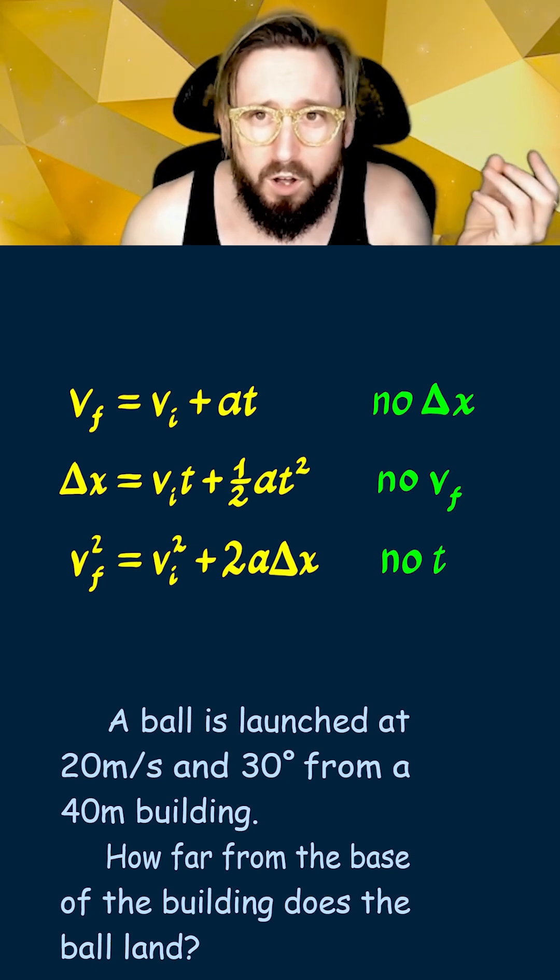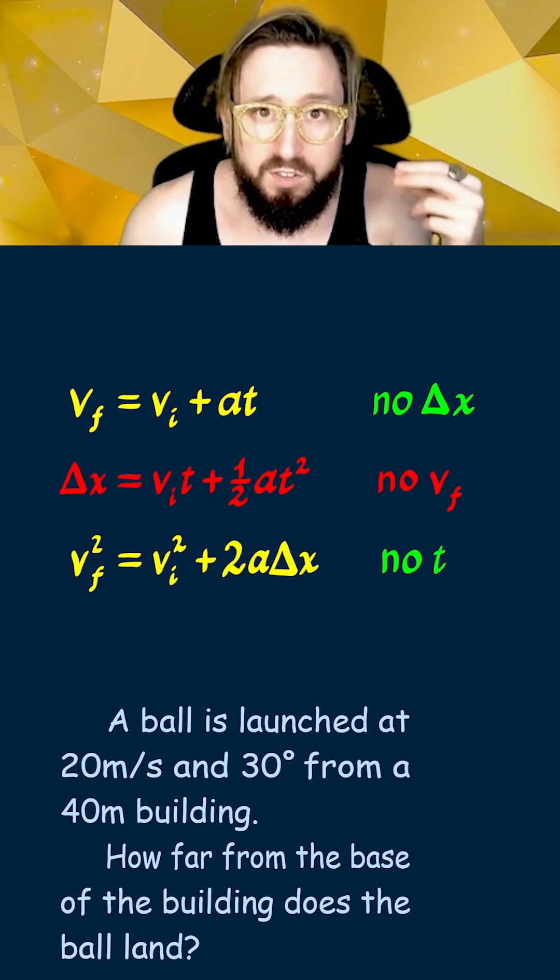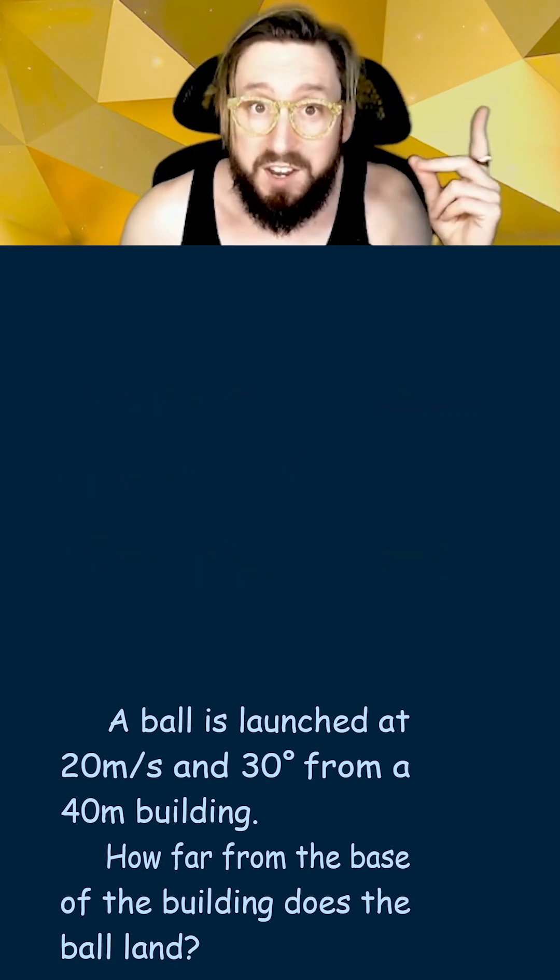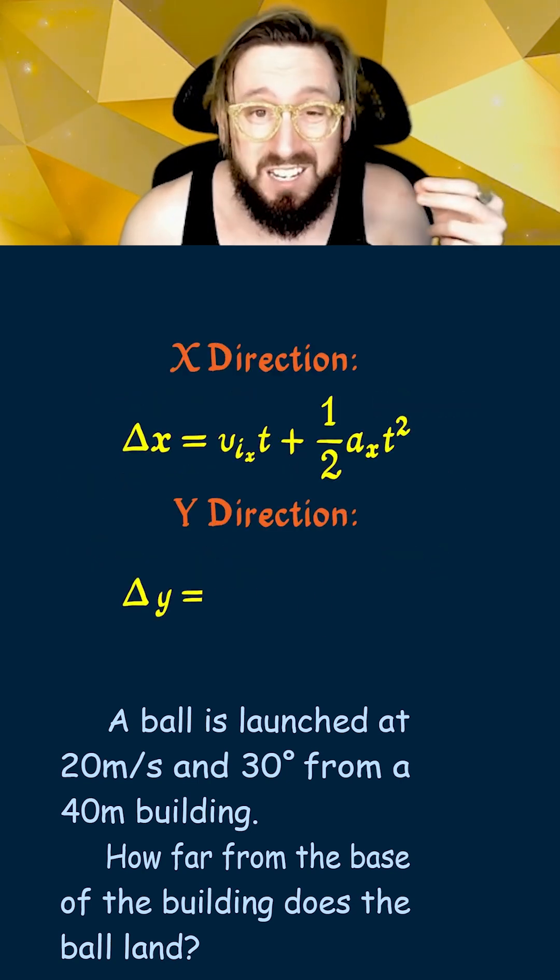Now choosing which kinematics equation to solve with, we're going to use this second one, because in this problem we're not given, nor are we asked, to find the final velocity. The next step is to write out our kinematics equations in each direction.